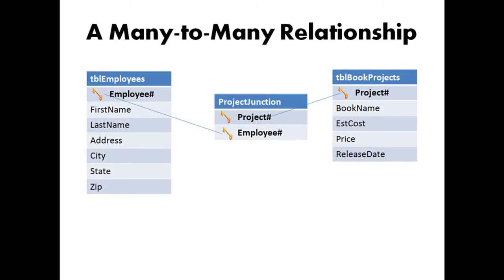So the solution is the many-to-many relationship, which looks just like this — three tables where one table, in this case our project junction table, will act as a bridge between the two tables that we want to relate: TBL employees and TBL book projects. And you can always spot the junction table by its composite key, or two primary keys.